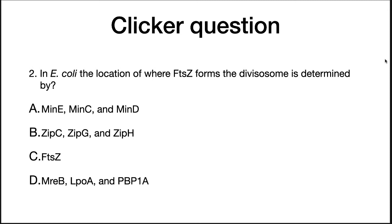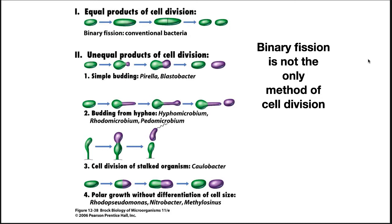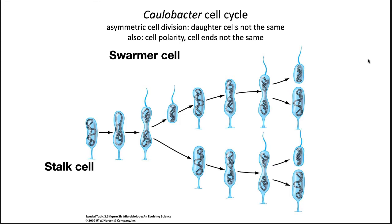Binary fission is not the only method of cell division. Some microorganisms divide by budding, forming unequal products. Budding can also occur at the end of a stalk. There are also stalk cells that will divide, forming a swarmer cell. An example is Caulobacter species that live in aquatic environments. A cell with a stalk will grow a child cell, which eventually breaks off. The new swarmer cell is motile, will swim away for a while, and eventually settle to form a new stalk cell. The stalk cell will continue with another round of division.